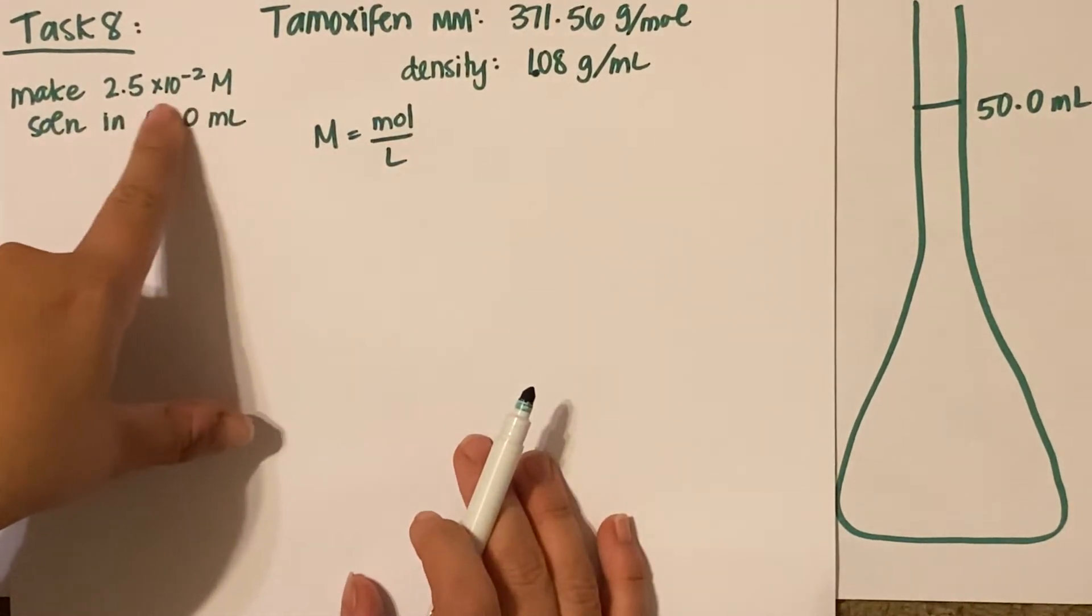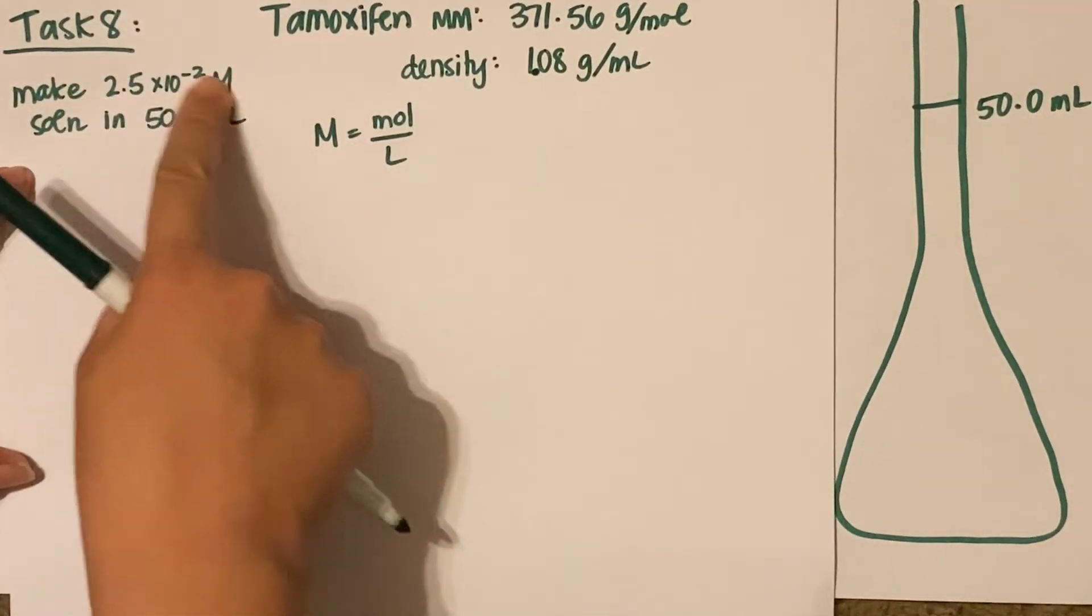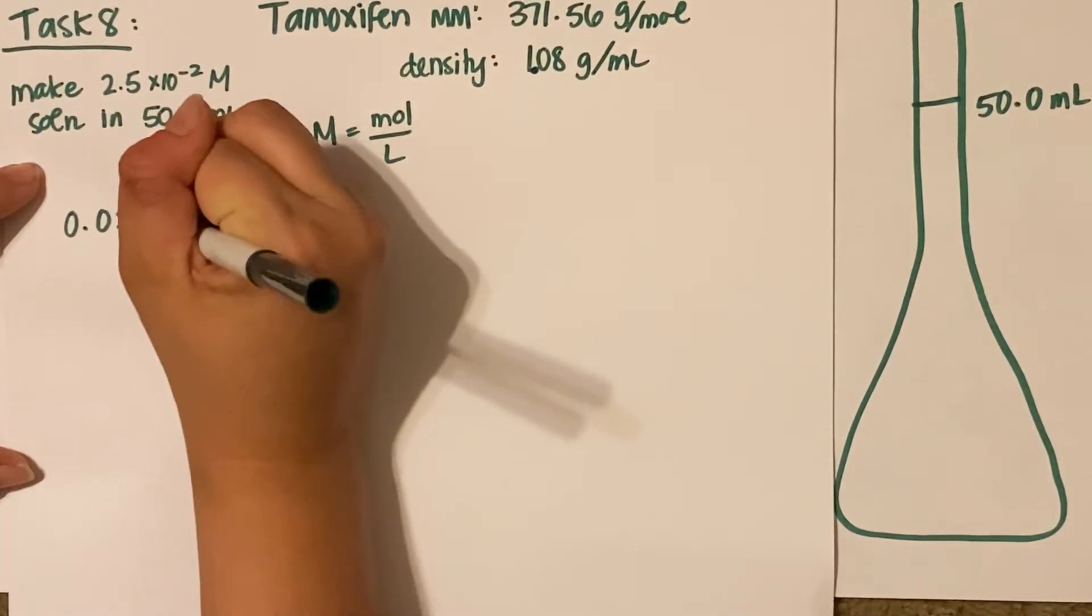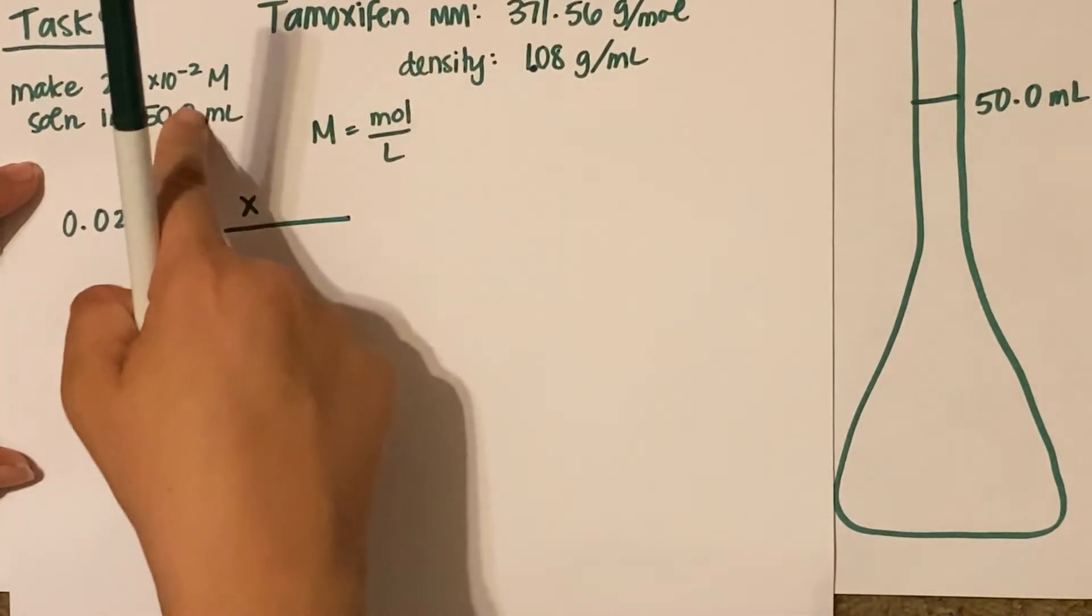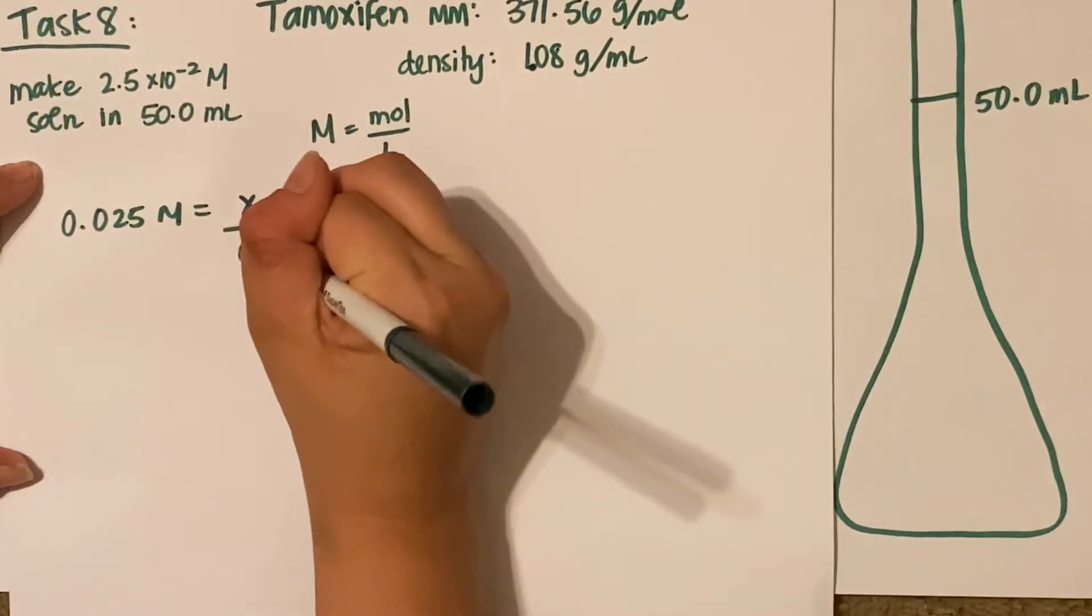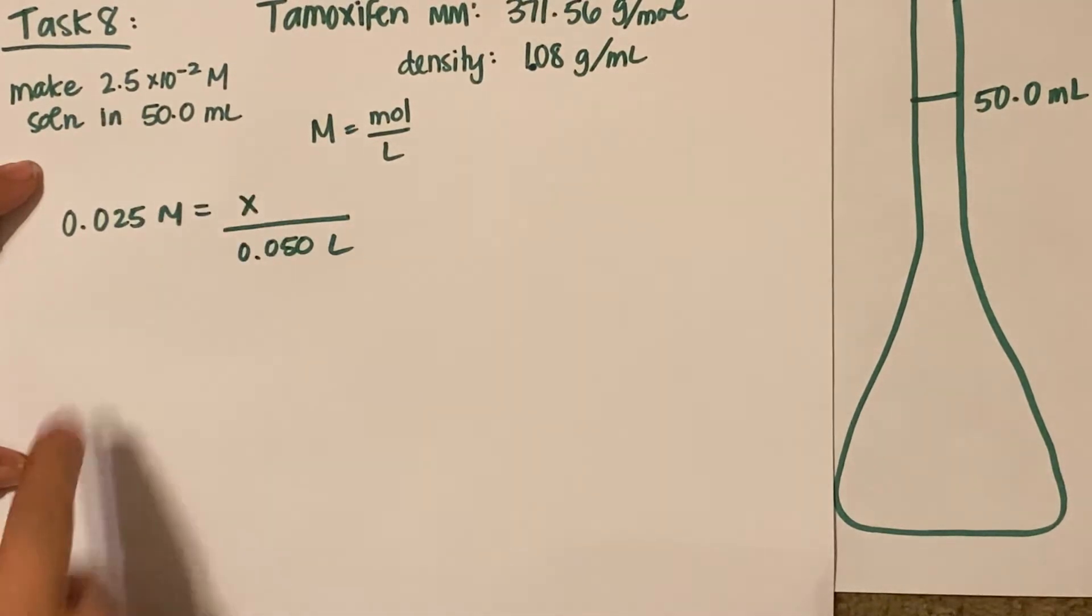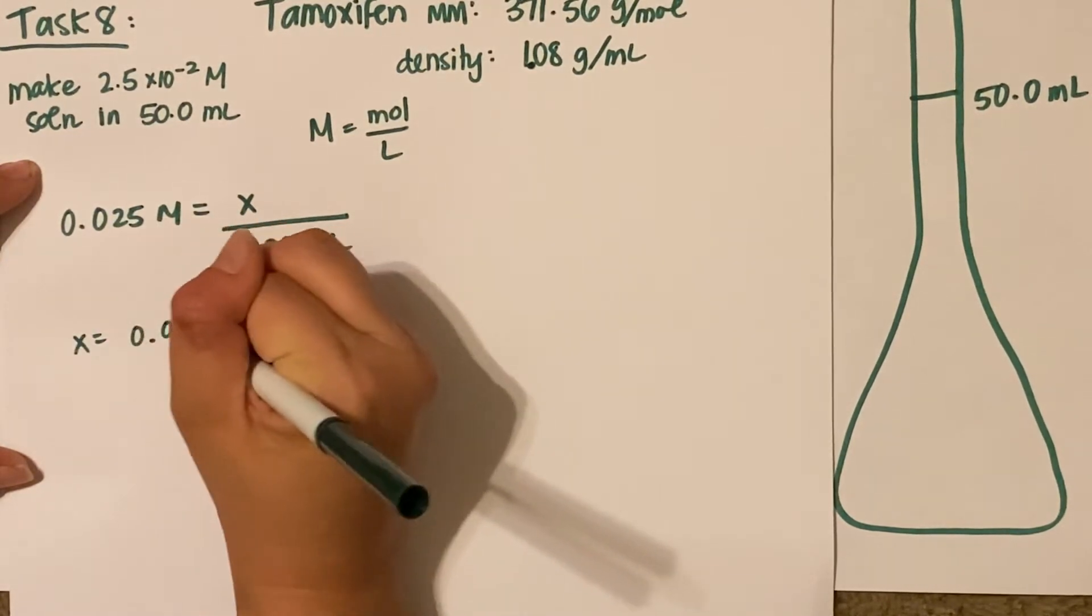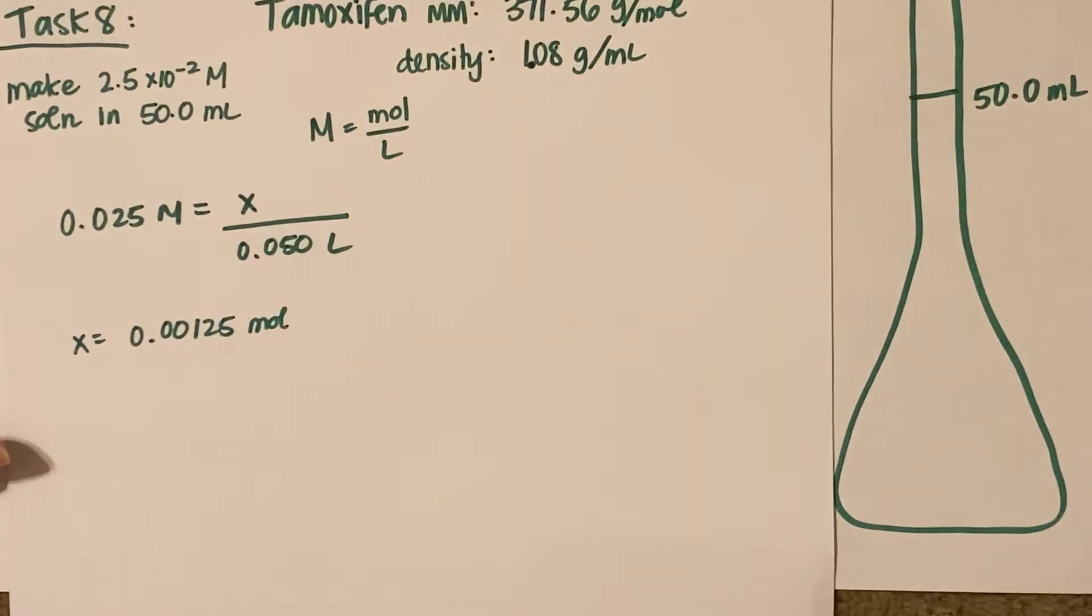This is in scientific notation. Move that decimal place two places back, and you'll set up this problem as 0.025 molar equals x moles divided by 0.05 liters. Now solve for x by multiplying these two numbers together. So x equals 0.00125 moles.